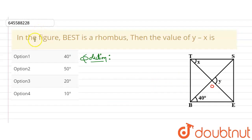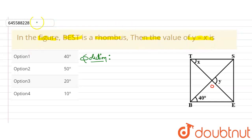Hello everyone. I have been given this question: in the figure, BEST is a rhombus — it is given to us in the question — then the value of y minus x is. So, this is a rhombus in the question. We need to find the value of y minus x.